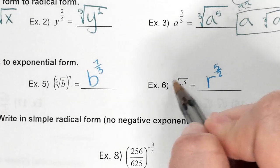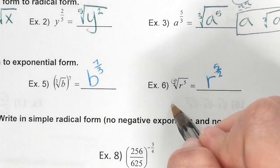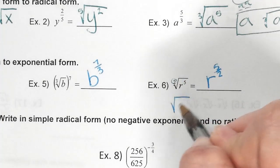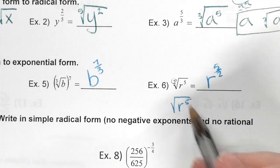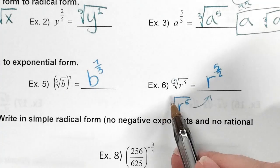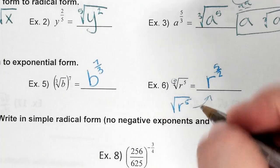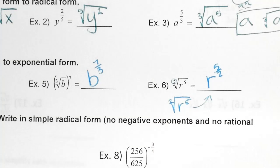For the last one, what is my exponent? Five over two. Will you always see a two written here when it's a square root? No — just writing the square root symbol gives you that. If there's not a number, we put a two, because we don't have to label a square root.